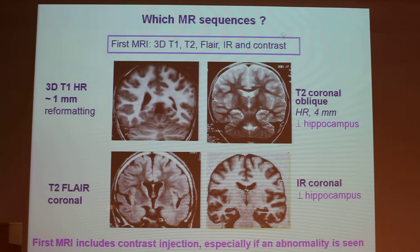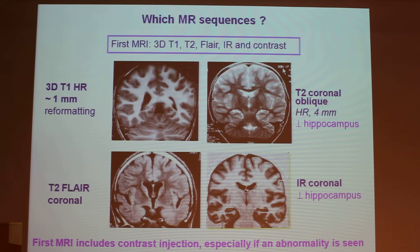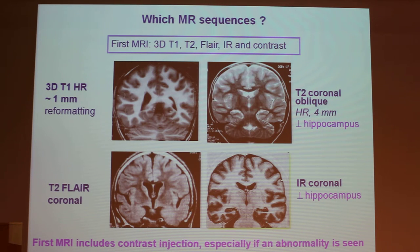In the first MRI, you have the 3D T1, a T2, a FLAIR, an inversion recovery, and contrast enhancement. The contrast enhancement should be performed if the first MRI is abnormal — if it is abnormal, it is mandatory. It is important to know that gadolinium has no interaction with the anti-epileptic treatment.